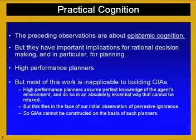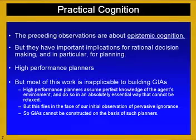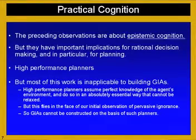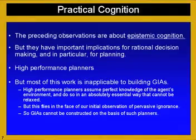These observations are about epistemic cognition — cognition about what to believe — but they have important implications for rational decision-making and planning. There's been a lot of excitement about high-performance planners in recent years, but that work isn't applicable to building GIAs. The difficulty is that it assumes — and it's an absolutely essential assumption to the architecture of a planner — that they have perfect knowledge of the world. There's no way to relax that assumption in high-performance planners, and a GIA will never satisfy that condition.